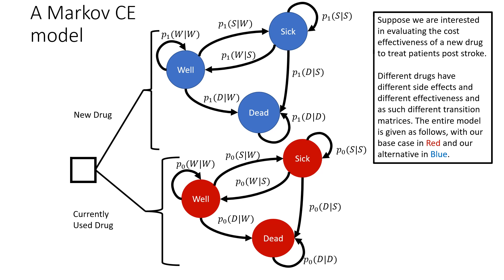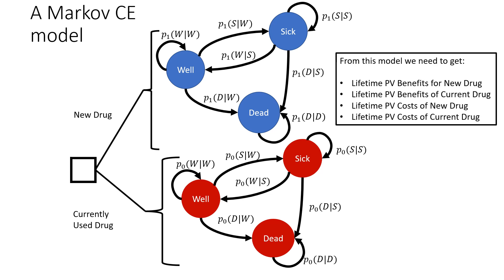The entire model is given as follows, with our base case in red at the bottom and our alternative case—the new drug—in blue. This looks like some great artwork, but we need to keep in mind what we want to get from this model. We need to get our lifetime present benefits from the new drug, lifetime present benefits from the current drug, the lifetime present costs from the new drug, and the lifetime present costs from the current drug. This is extremely important for calculating our ICERs because, remember, our solution concept does not change.